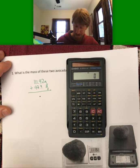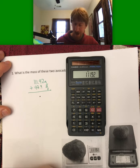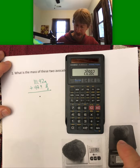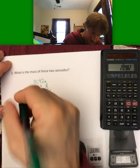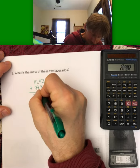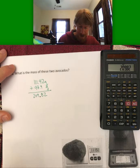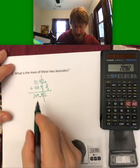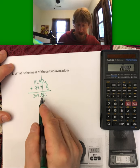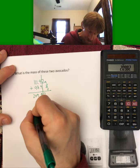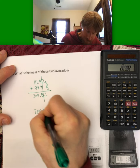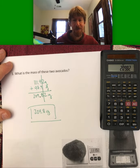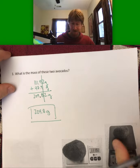And let's see what we get. 111.92 plus 97.9. I get 209.82. And now I draw my line for my fewest number of decimal places. That's what I'm doing here. So this one only has one decimal place. That's why I drew the line there. And my answer, 209.8 grams. Not too bad.